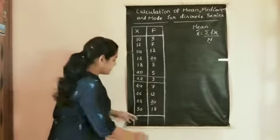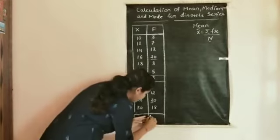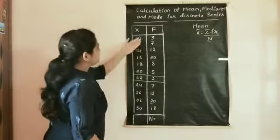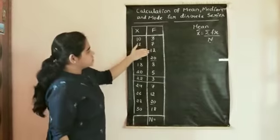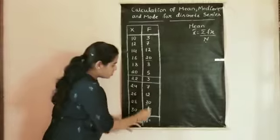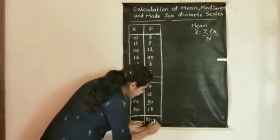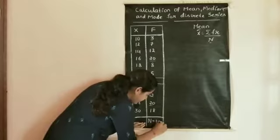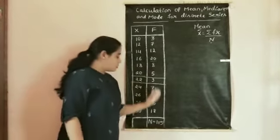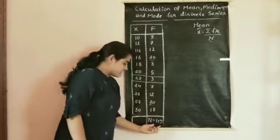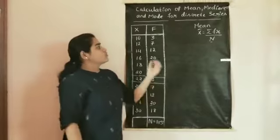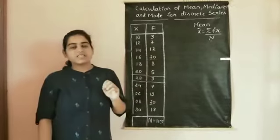To find the n value, we add all the given frequencies — 3 plus 7, plus 12, plus 20, plus 18, and so on — giving us a total of 115. So the total number of observations is 115.